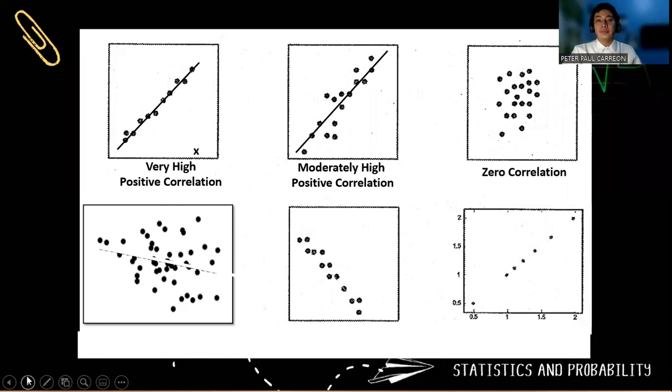Third, there is zero correlation. So notice that we cannot draw a trend line here because we can neither draw a trend line going there or going here. So there is zero correlation.